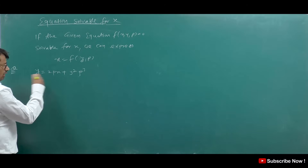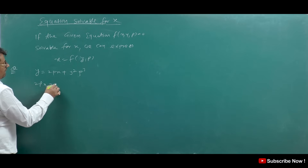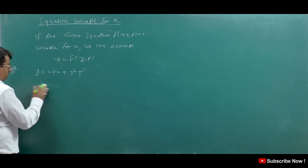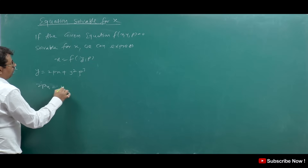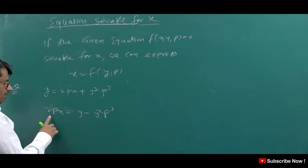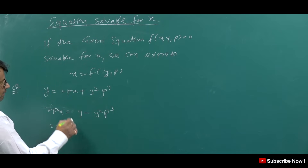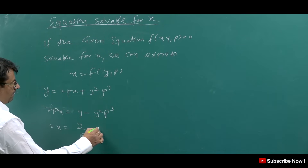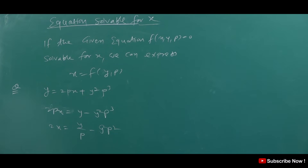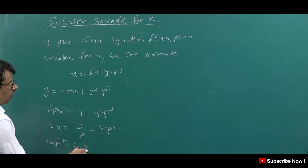For example, if X = Y − Y²P³, then we divide it to get X/Y = 1/P − Y²/P². Now, what do we do? We will differentiate it with respect to Y.